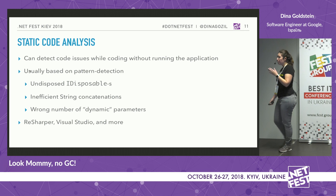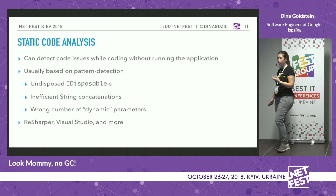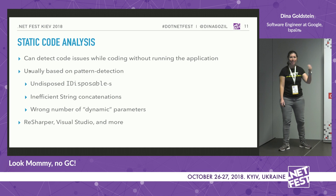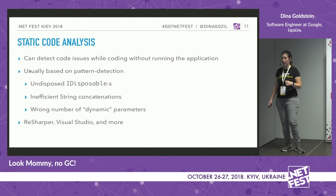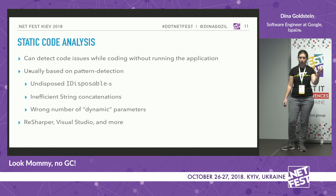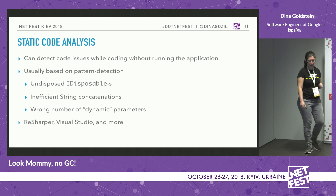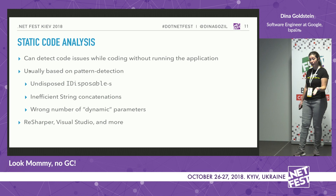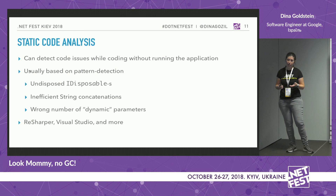Next: static code analysis. Imagine finding bugs in your code without even running it. An automatic tool does a code review for you, going over your code and detecting problems based on pattern matching. For example, if you're not disposing an IDisposable, a static analyzer can find that. Or if there's no match between the number of arguments and placeholders in your string format, it can find that too — including inefficient string concatenations, like using the plus operator between strings rather than a StringBuilder. There are many tools: Visual Studio has some built in, ReSharper has more, and there are commercial tools like Coverity.